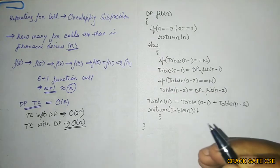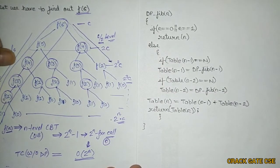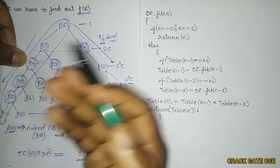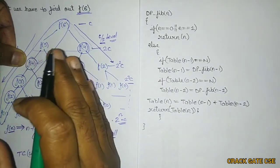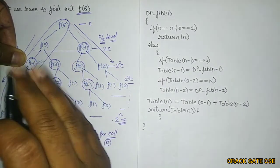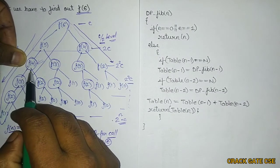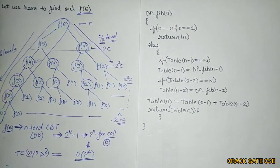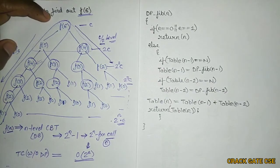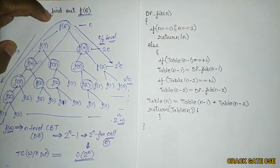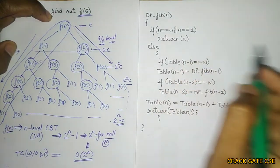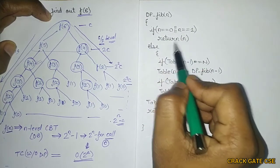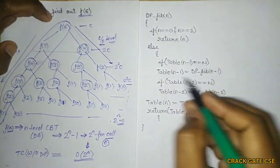Whenever we call a function in dynamic programming — for example, calling F(4) — we first check whether F(4) is available in the table. If the table value is null, only then do we execute that function; otherwise, we skip it. Now let's look at the algorithm using dynamic programming: the initial condition is the same — if n equals 0 or 1, return n.